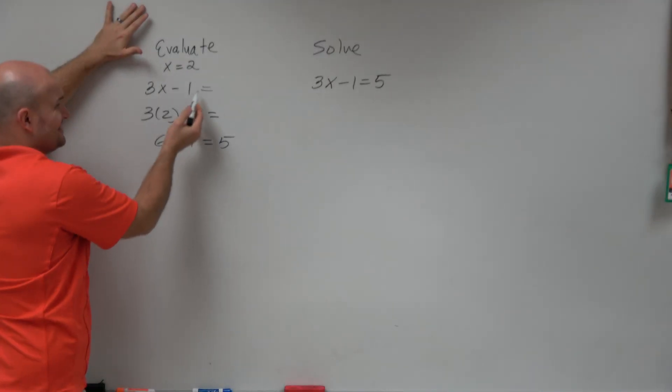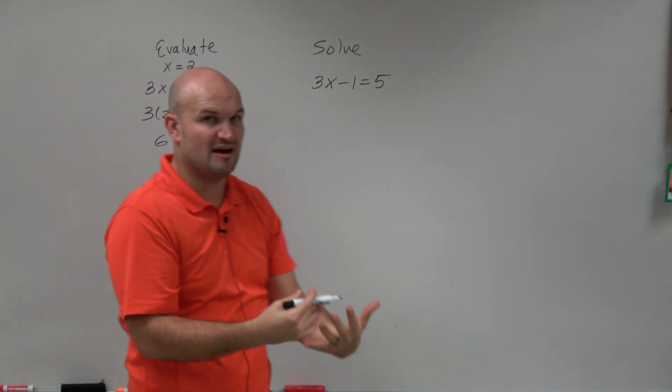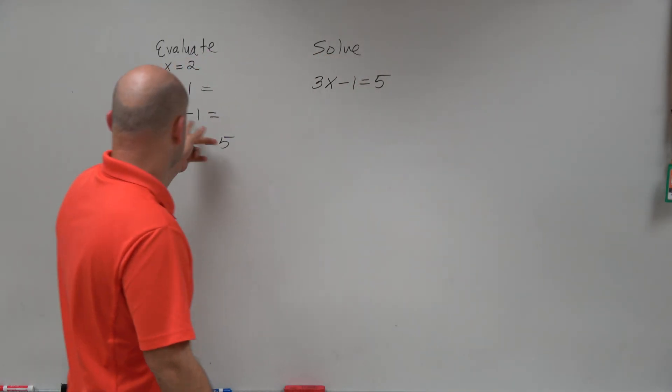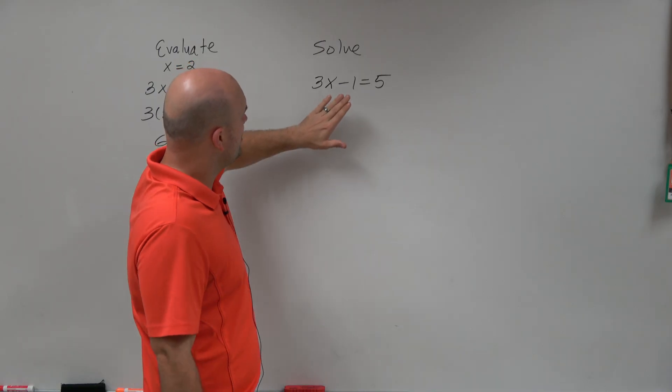Notice here, when I did this, I followed the order of operations. I multiplied, then I subtracted. And that was very important. Because if we didn't follow the order of operations, everybody would get different answers. If you're deciding to subtract before you multiply, you're going to get a different answer.